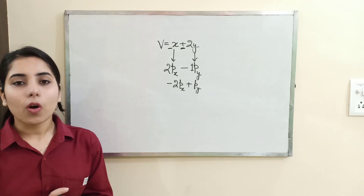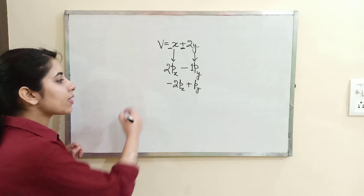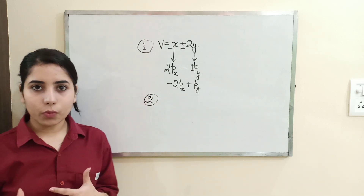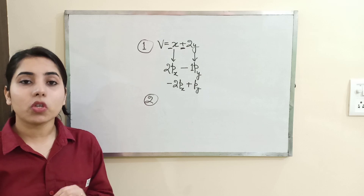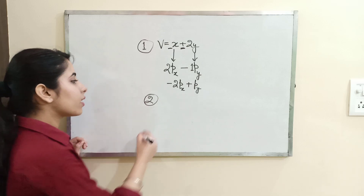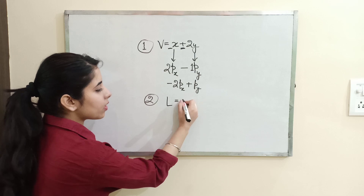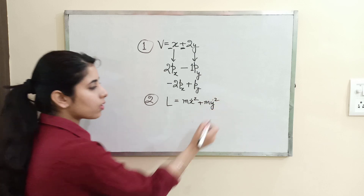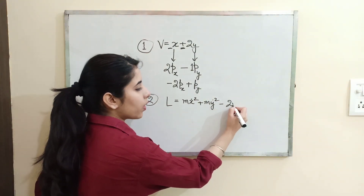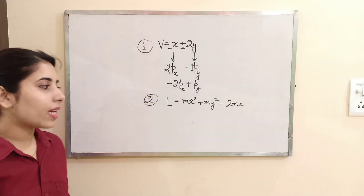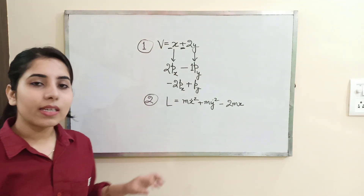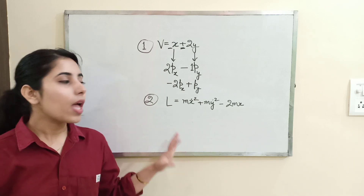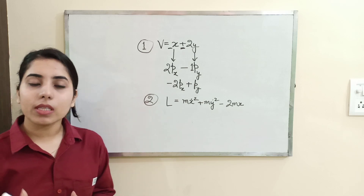Our second trick is related to the Lagrangian and again a conserved quantity or constant of motion. Anytime if the Lagrangian is given to you — for example, it is given as mx-dot squared plus my-dot squared minus 2mx — and if you want to know what the conserved quantity corresponding to that is, what you need to check is the cyclic coordinate. The cyclic coordinate is one for which the derivative is present but the coordinate itself is not present in the Lagrangian.